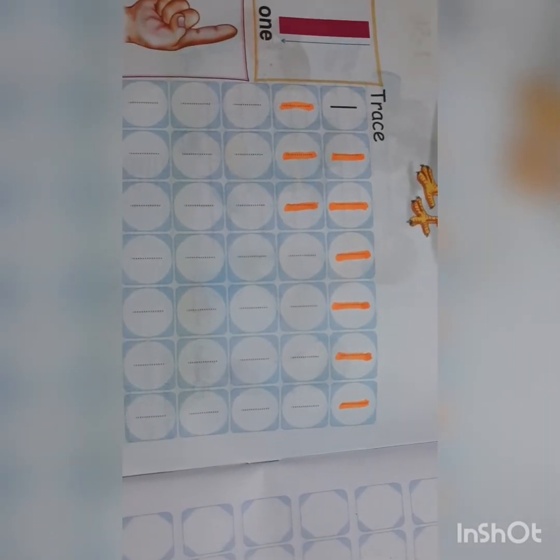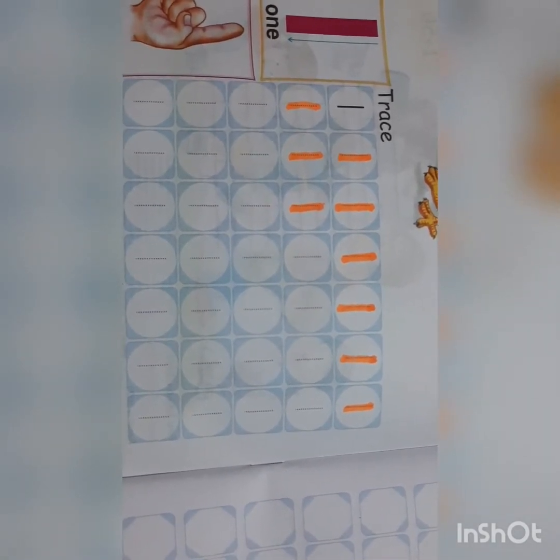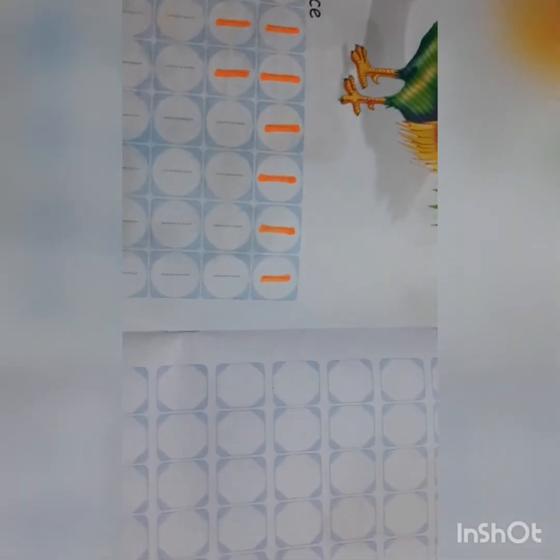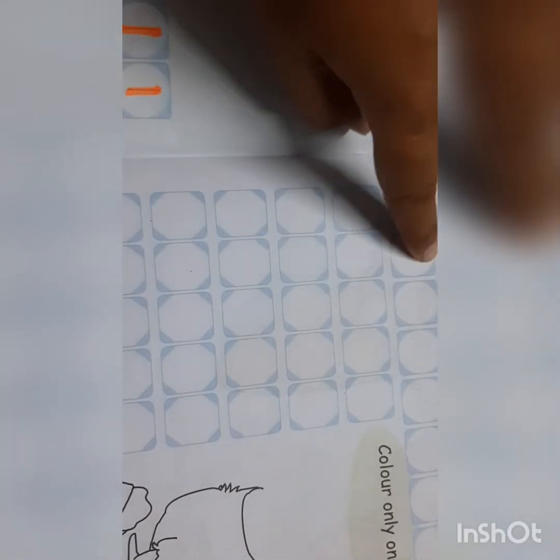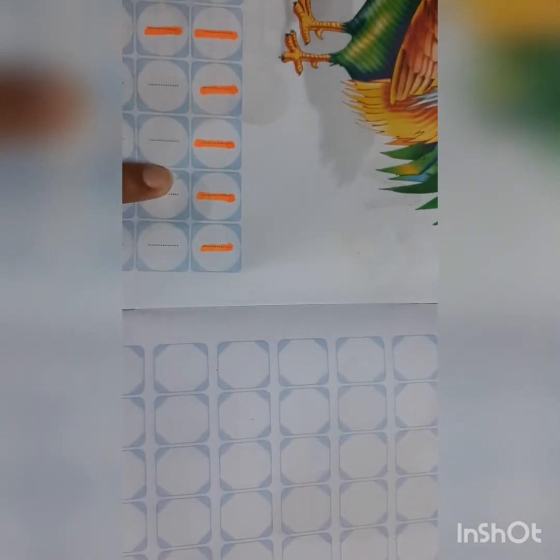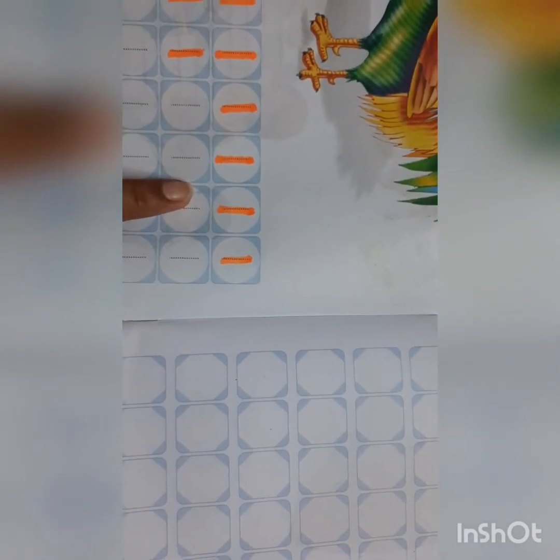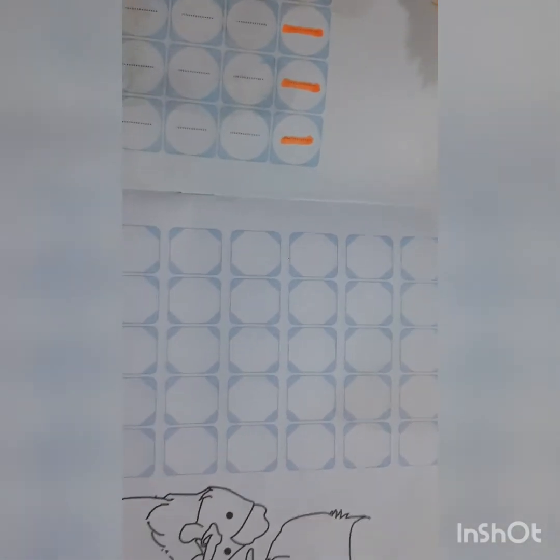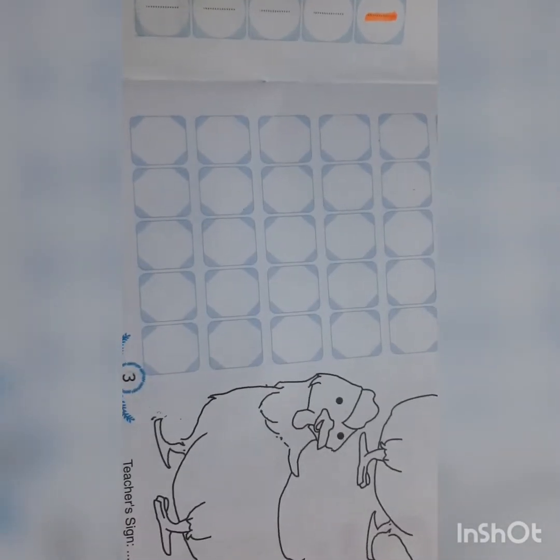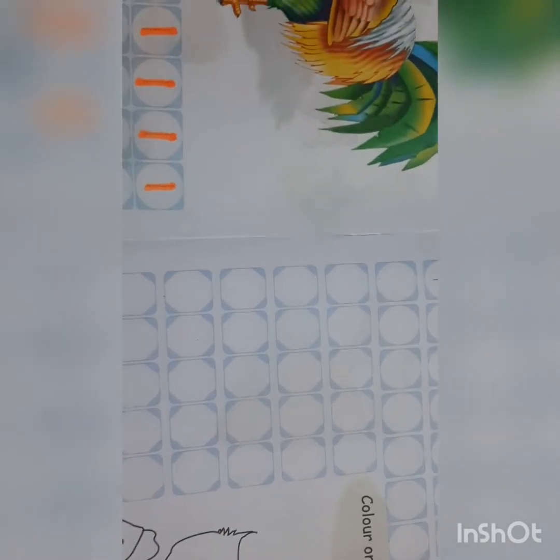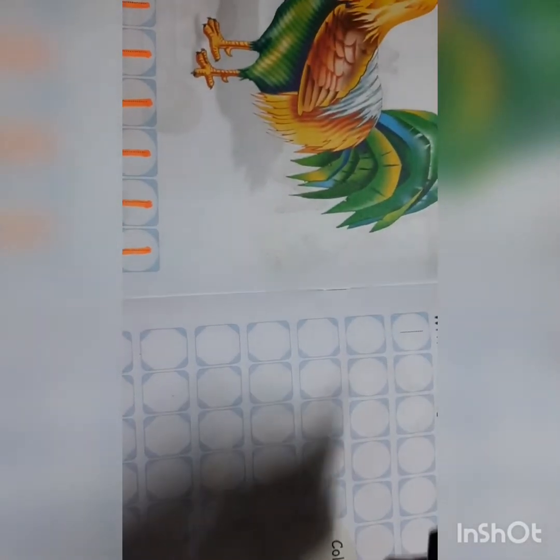Dear children, many times you have practiced writing one, so now you have become perfect at writing it. So we will write one without the dotted line. We will write here. You have learned how to trace number one, you have learned how to write number one on the slate. Today we will write on page 3. You can see boxes are given here, so we will write one in each box.